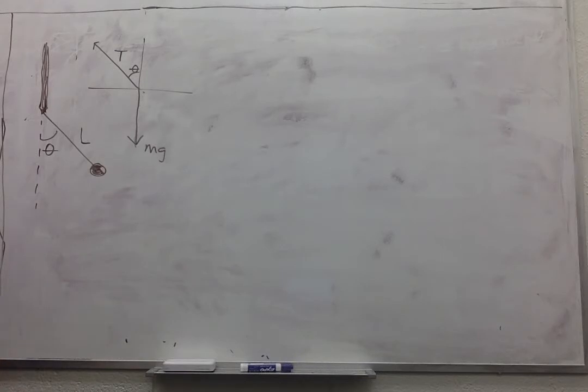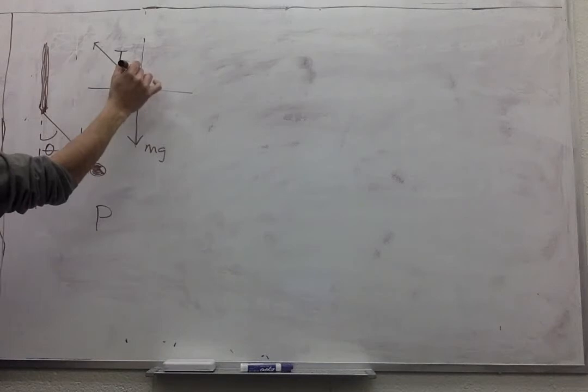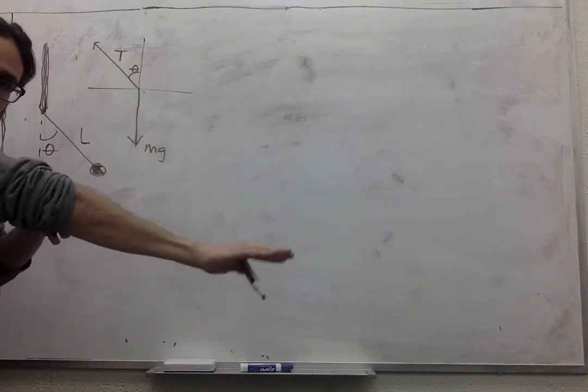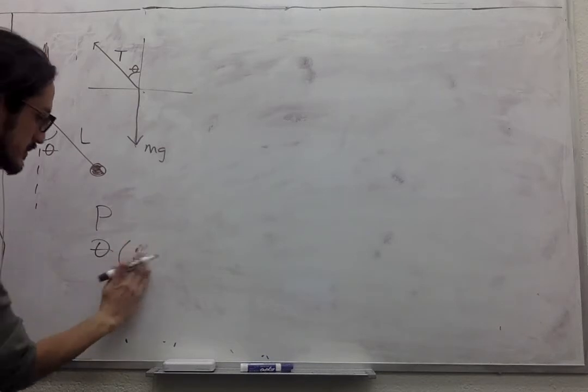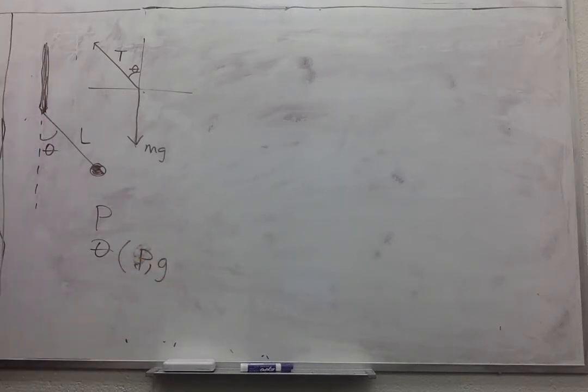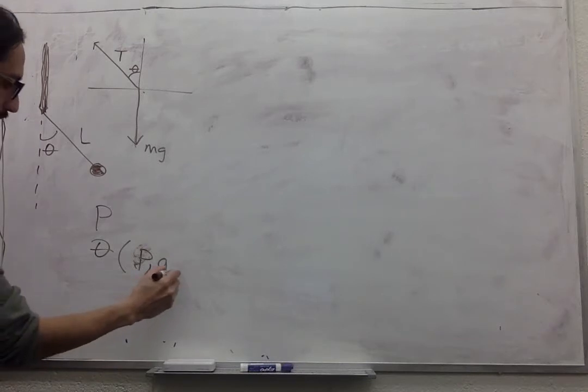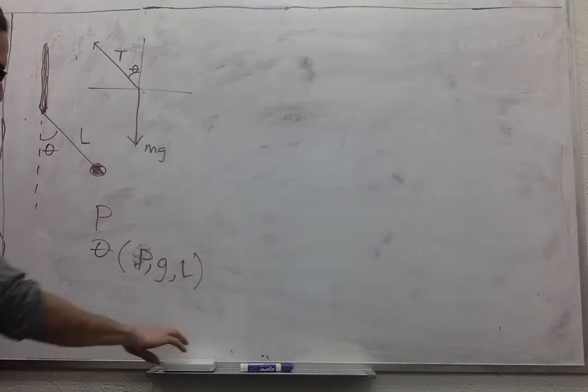And then the problem tells us that the period is P. And we have to find how this angle theta, so how much it moves when you're rotating it, how much it deviates from the vertical. And then find that angle theta as a function of the period, gravity, and the length.